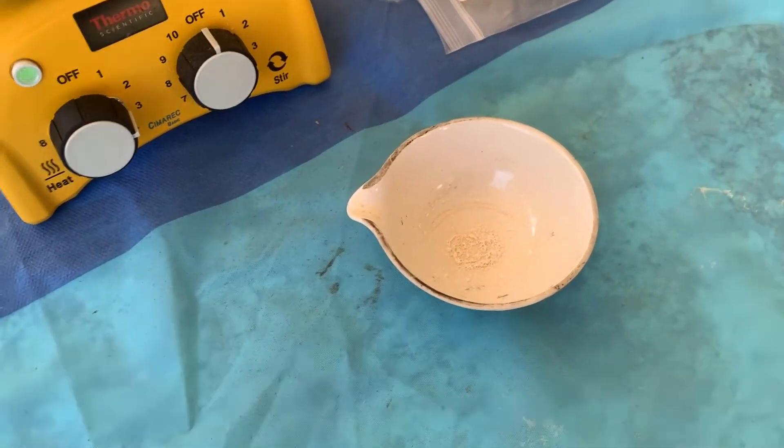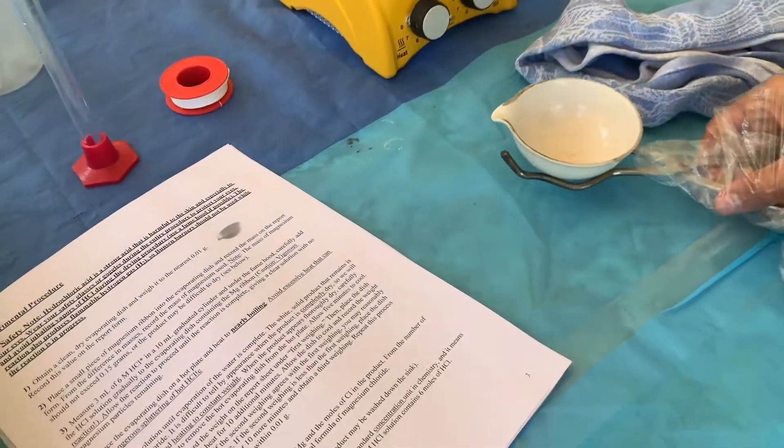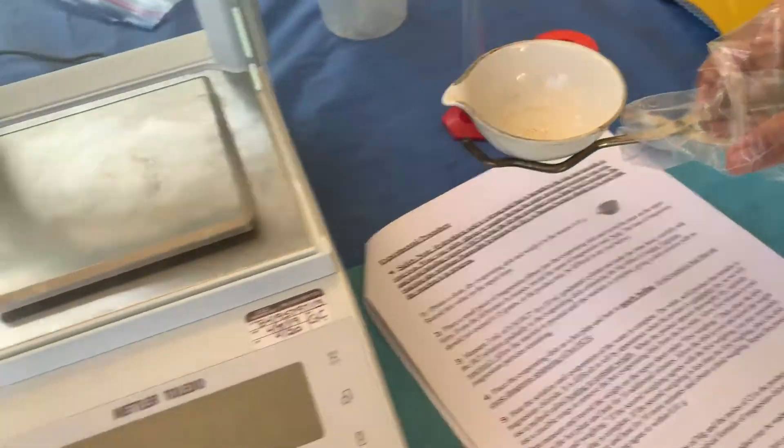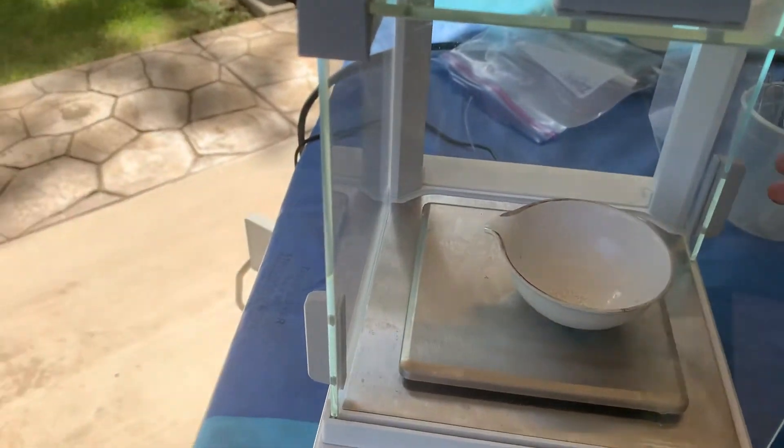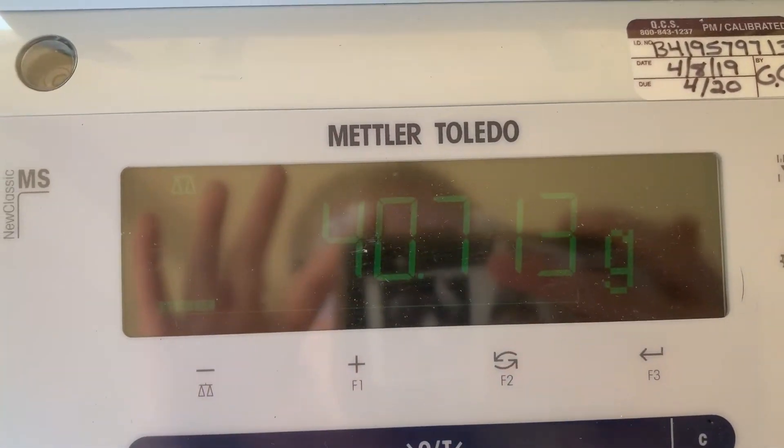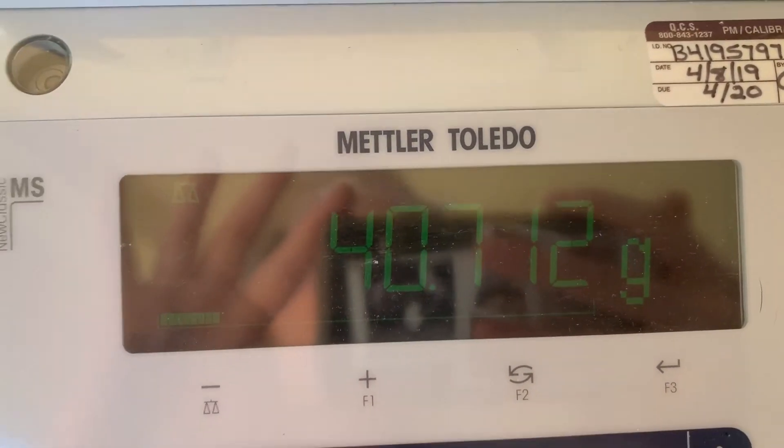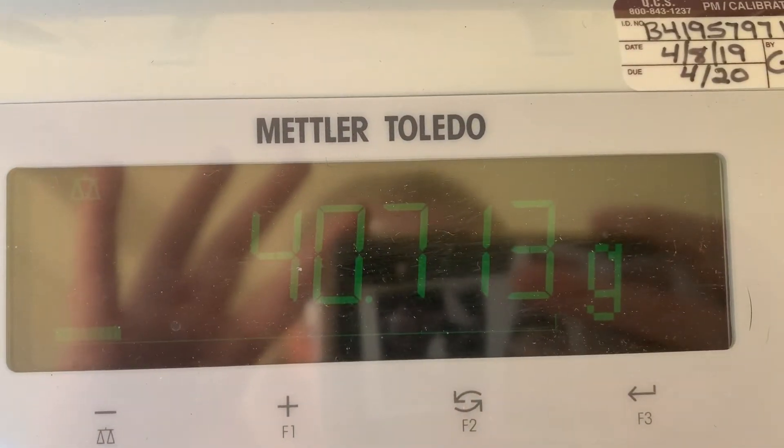Then we're going to weigh it. So now it's been five minutes and it's cool. So we're going to weigh the evaporating dish. And I did tear the scale. So the weight of the evaporating dish with the magnesium ribbon and hydrochloric acid after the first heating is this.